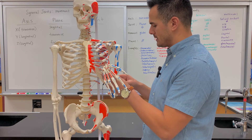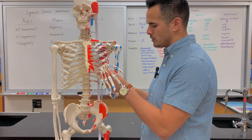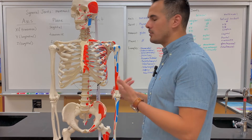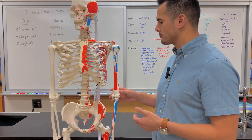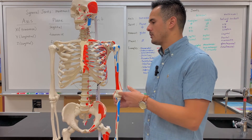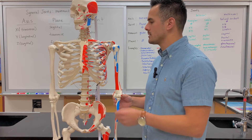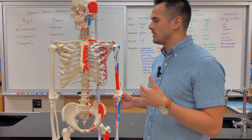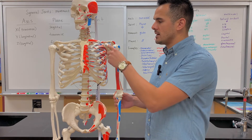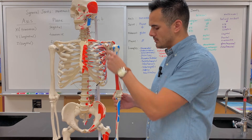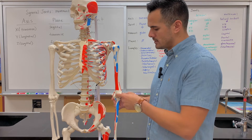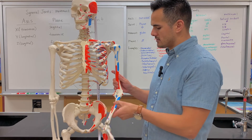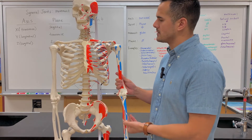As it contracts, the insertion is moving towards the origin — so you bring it up. As you're going through and learning the origin, insertion, and actions of these muscles, if you have a good understanding of all the movements allowed at the joints where the muscle starts and ends, you can figure out the action of the muscle. Because I know the short head of the bicep goes from here to here, and this is a hinge joint with only flexion and extension, as the muscle contracts it brings the insertion towards the origin.